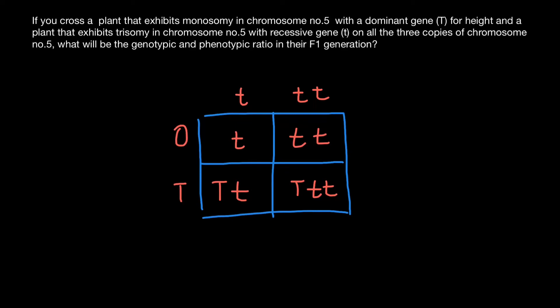So what is our ratio of the genotypes? This is one distinctive genotype with one chromosome with recessive gene on it. This is another distinctive genotype with two chromosomes with recessive genes. And here is the third and here is the fourth. So all four genotypes are different, and the ratio is going to be 1:1:1:1.